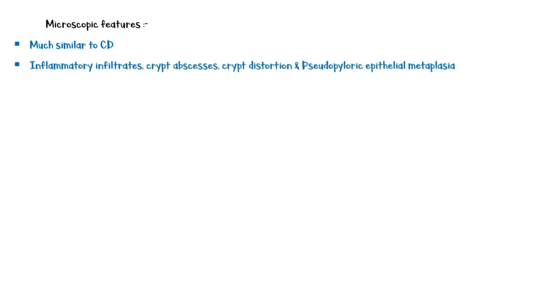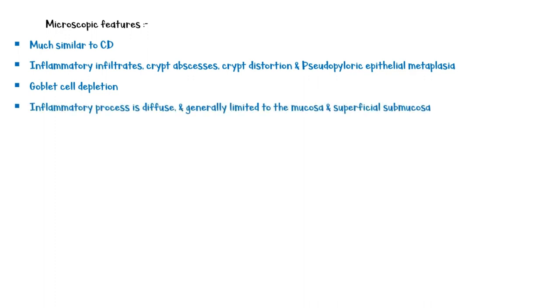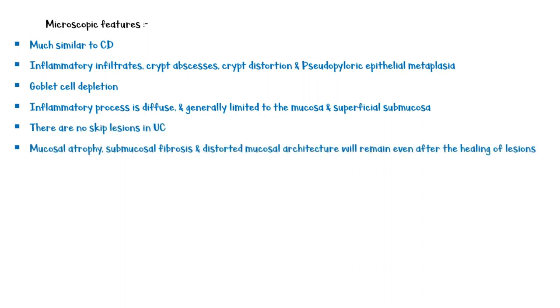Microscopic features of ulcerative colitis are much similar to Crohn's disease and include inflammatory infiltrates, crypt abscesses, crypt distortion, and pseudopyloric epithelial metaplasia. In addition, goblet cell depletion is also seen with ulcerative colitis. The inflammatory process is diffuse and generally limited to the mucosa and superficial submucosa. There are no skip lesions in ulcerative colitis. Mucosal atrophy, submucosal fibrosis, and distorted mucosal architecture will remain even after healing of lesions. Granulomas are not present in ulcerative colitis.